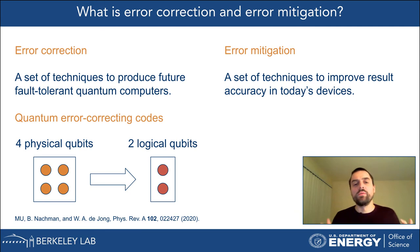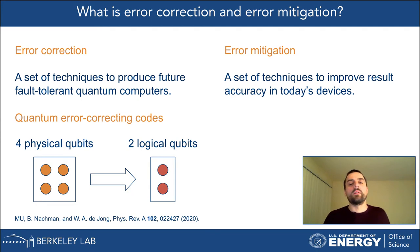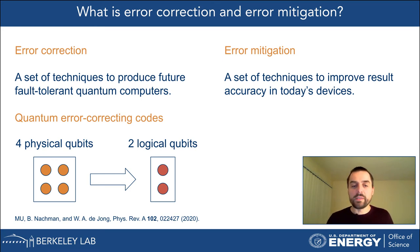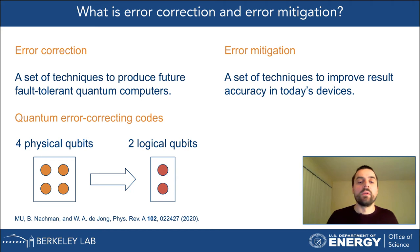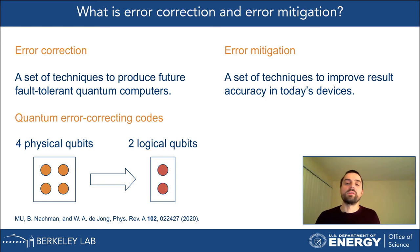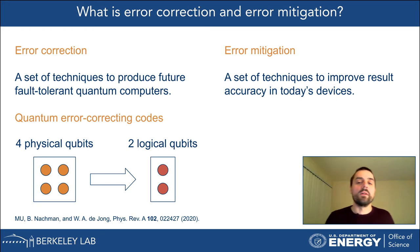It's important to explain the difference between error correction and error mitigation. Error correction is a set of techniques to produce future fault-tolerant quantum computers — ones that can have an arbitrarily low error rate. It's fairly difficult to design such a system at large scale, so it's at least a couple of years away. Error mitigation, on the other hand, is a set of techniques we can use already today to improve the quality of results from current devices.